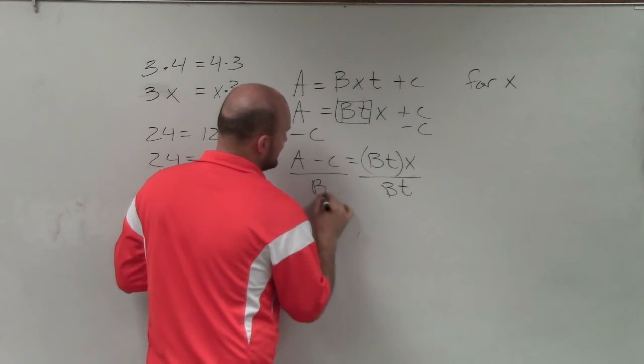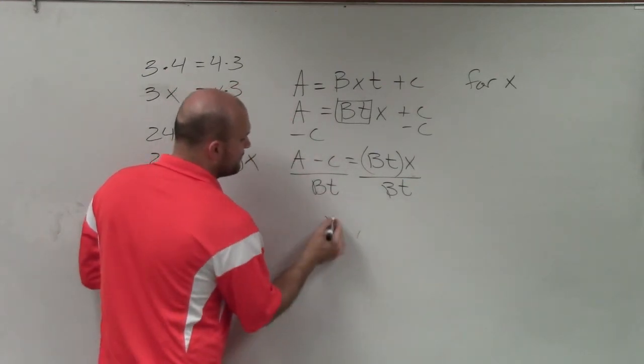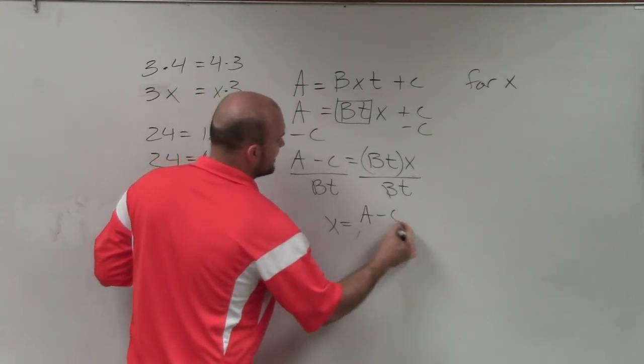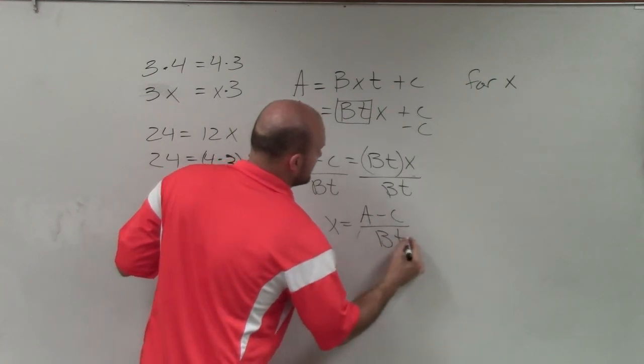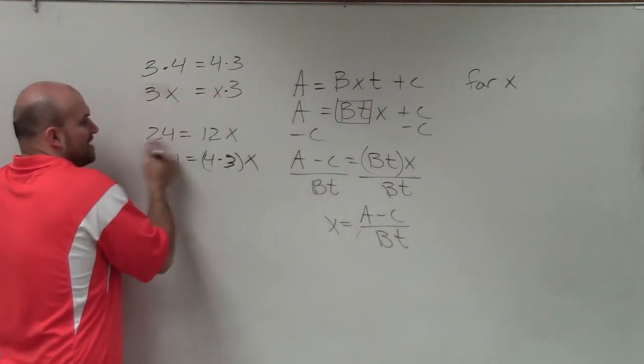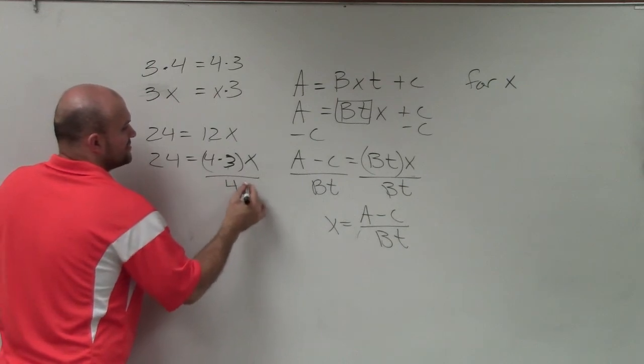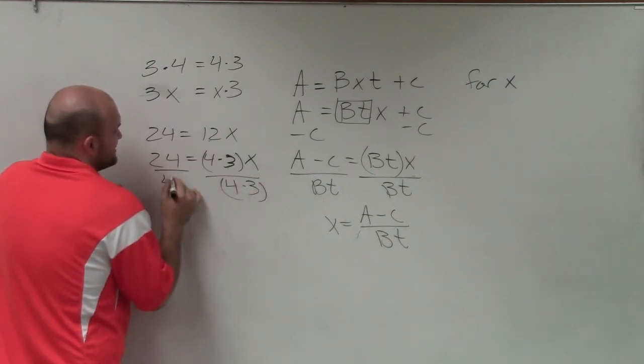And I have to make sure I divide by b and t on both sides. Therefore, x equals A minus c divided by bt. And you could see if I did the same thing, instead of dividing by 12 on both sides, I could also divide by 4 times 3 because it's the same thing.